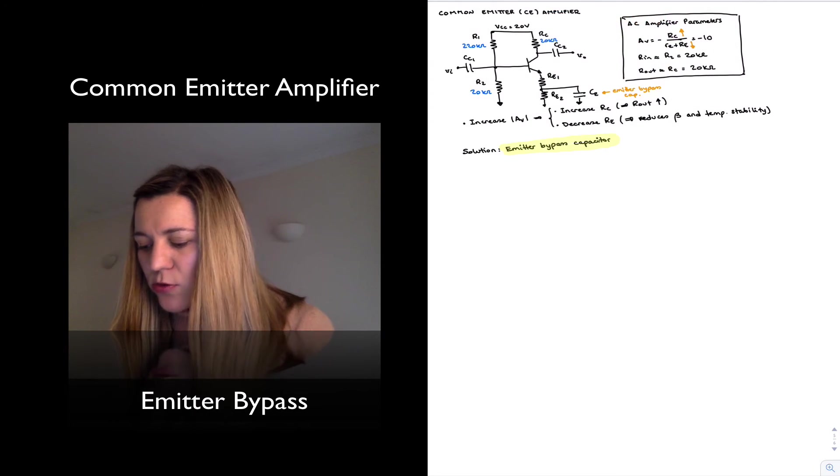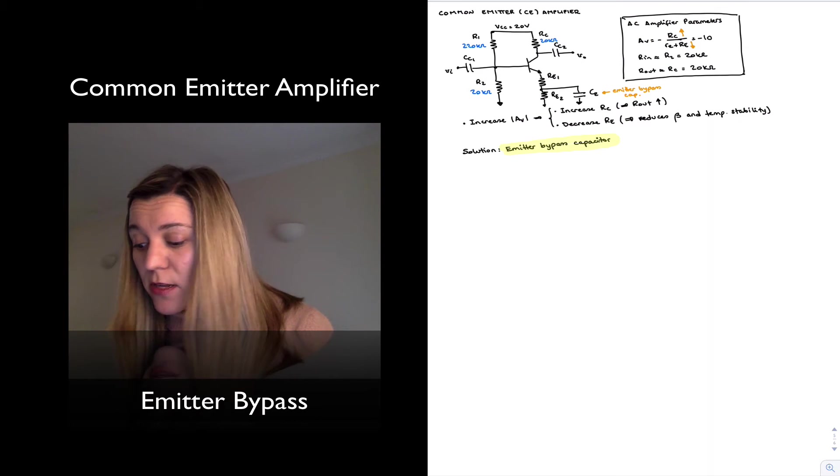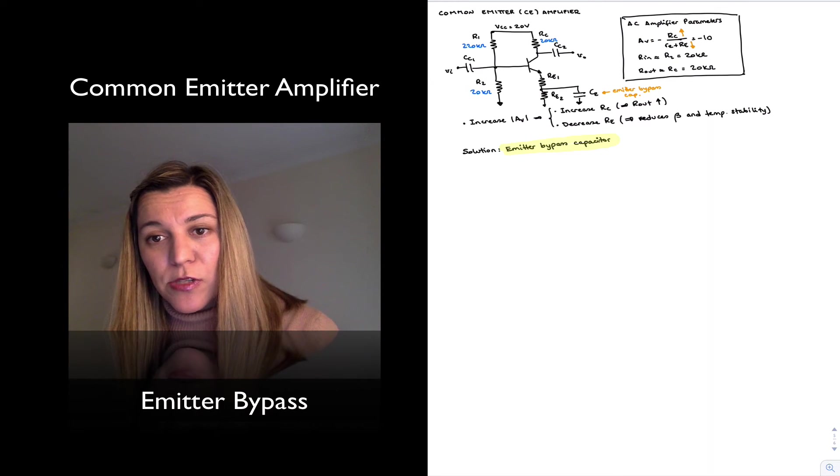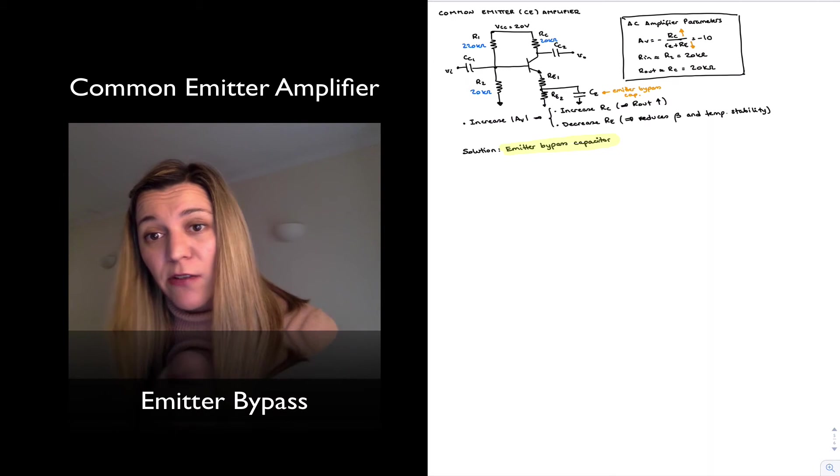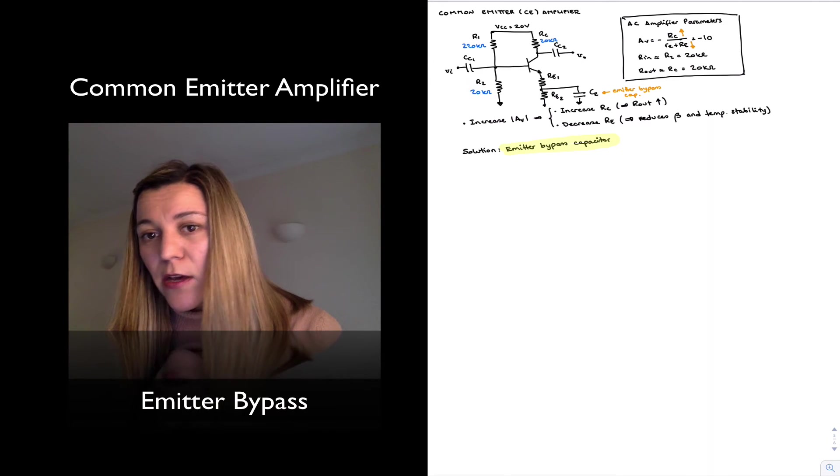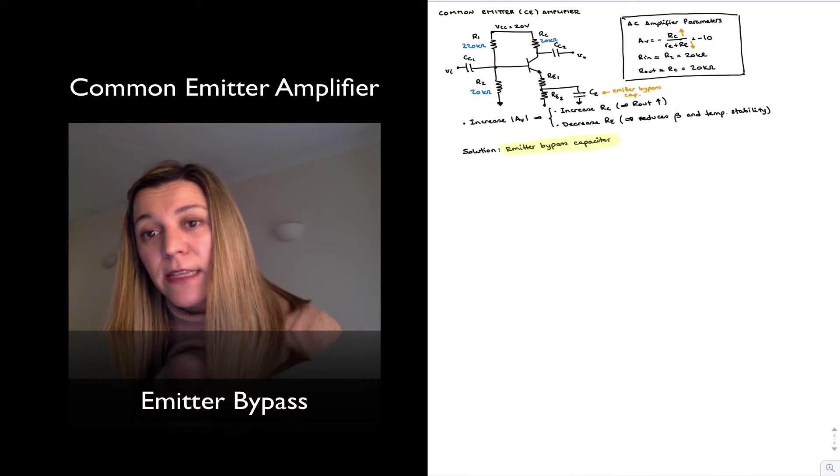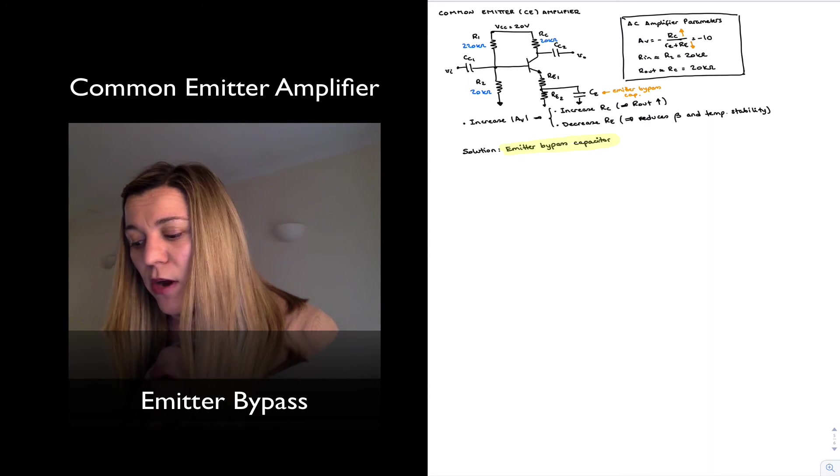Now, what this capacitor does is notice that for DC purposes, this capacitor will behave as an open circuit, which means for DC purposes, in the DC equivalent circuit, the overall emitter resistance is still a series combination of RE1 and RE2.